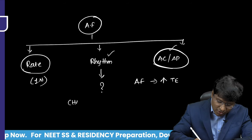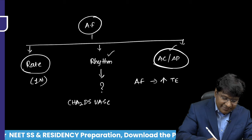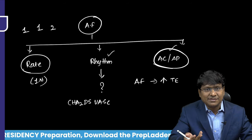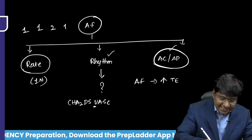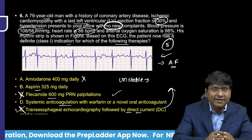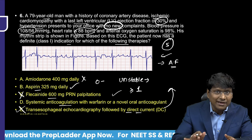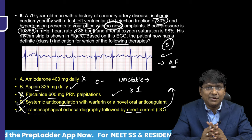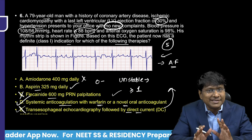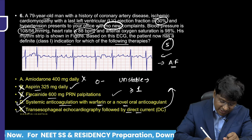The decision between antiplatelet and anticoagulation is made using the CHA2DS2-VASc scoring system. This patient has congestive heart failure, hypertension, age over 75 years, and vascular disease (ischemic cardiomyopathy), giving a total score of approximately 5. A score of 0 warrants antiplatelet therapy; a score of 1 or more warrants anticoagulation. With a score of 5, systemic anticoagulation with warfarin or a novel oral anticoagulant is the correct answer.